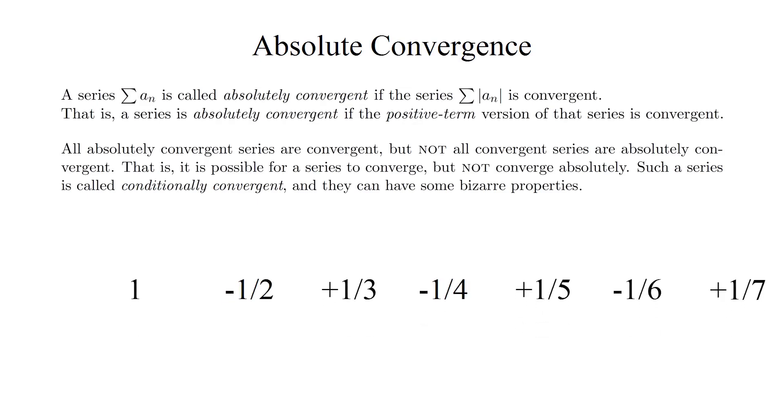For one, it turns out if you have a conditionally convergent series, like the one below, you can change the sum of the series to whatever you want, even make it divergent, just by rearranging the order in which you add up the terms. This fact is called the Riemann series theorem, if you want to look it up.